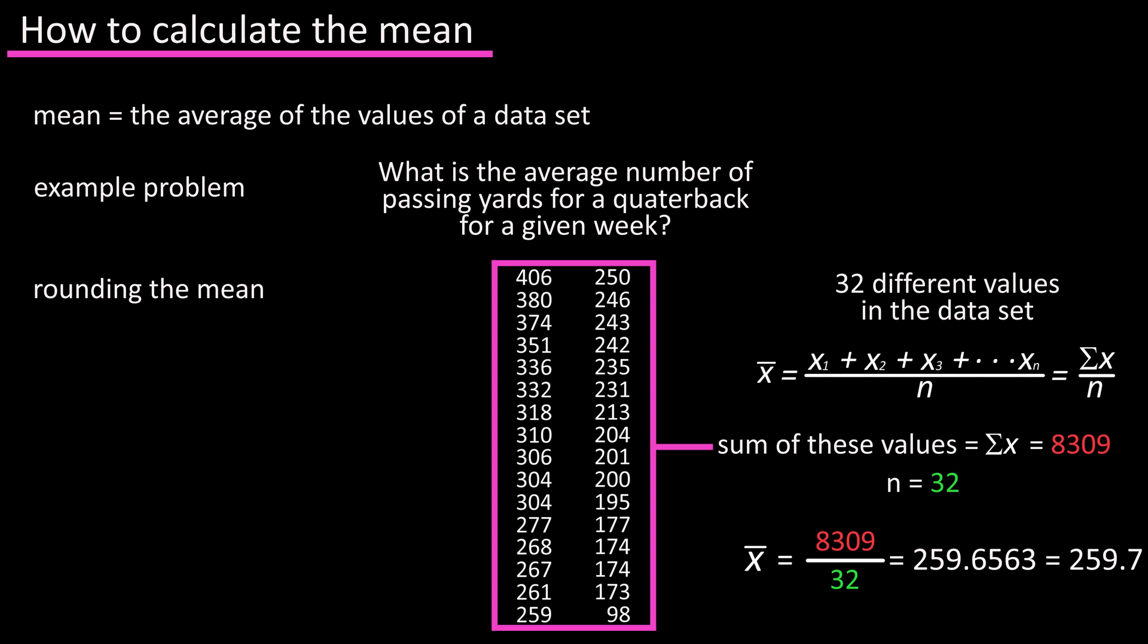When rounding the mean, typically we want to use one more decimal place that occurs in the raw data. So, in our example, I rounded to the tenths. For this data set, you would round to the hundredths column.